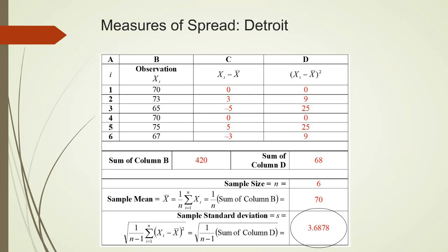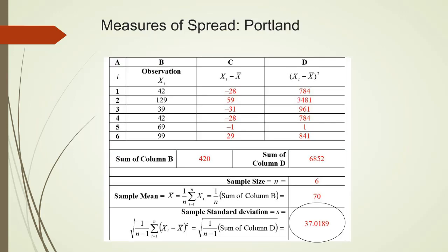The standard deviation, or the std for Detroit, is about 3.69. We repeat the same calculations for Portland next. The standard deviation for Portland is found to be 37.02, which is clearly bigger than that for Detroit, as we have expected.